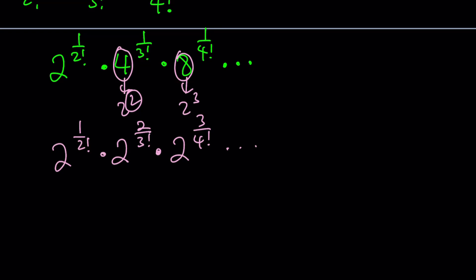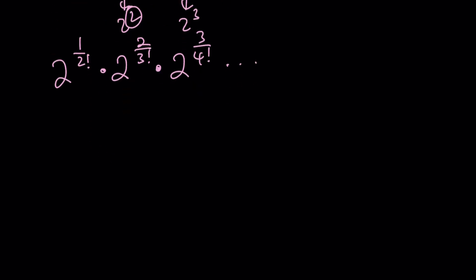So now we can basically add all the exponents because we have the same base. This gives us 2 to the power 1 over 2 factorial, plus 2 over 3 factorial, plus 3 over 4 factorial, so on and so forth. And this is the million dollar question. What's the million dollar question? The million dollar question is the exponent. 1 over 2 factorial, plus 2 over 3 factorial, plus 3 over 4 factorial, and so on and so forth. How do we evaluate the sum? And there's a really nice way to do it. Let me show you.